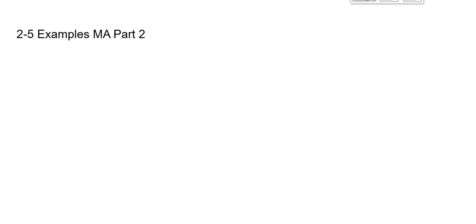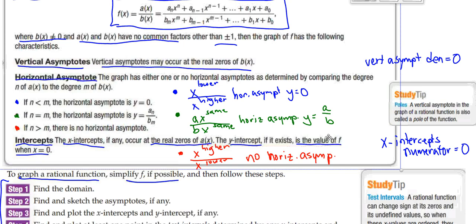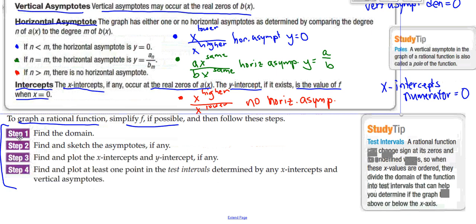This is a recording for math analysis, section 2-5, part 2. We just looked at ways to find asymptotes. We're going to find the domain, find and sketch the asymptotes if any, find and plot the x and y intercepts, use an interval table to determine some extra points, and then graph those as we work through this.